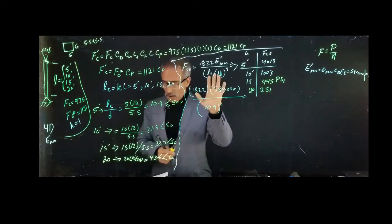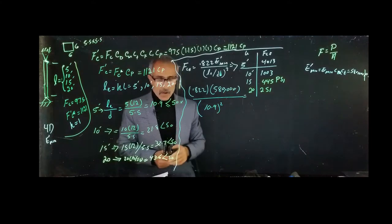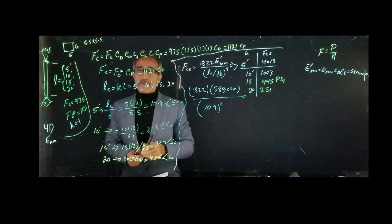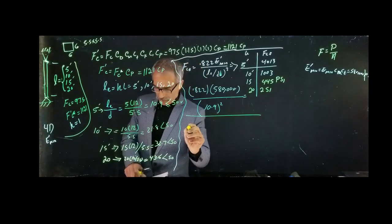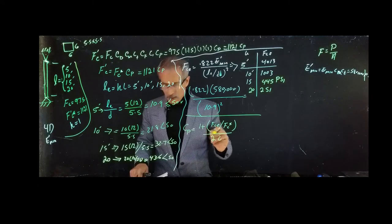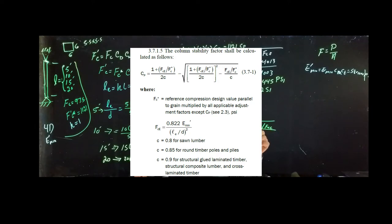Now we calculate the adjustment factor CP from NDS section 3.7. The equation for CP is: CP = [(1 + Fce/F*c) / (2c)] minus the square root of [(1 + Fce/F*c) / (2c)]² minus [Fce/F*c / c], where c = 0.8 for sawn lumber.